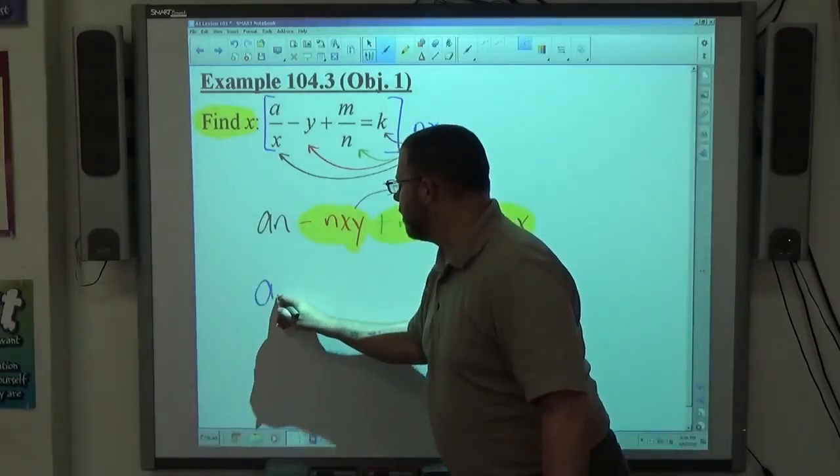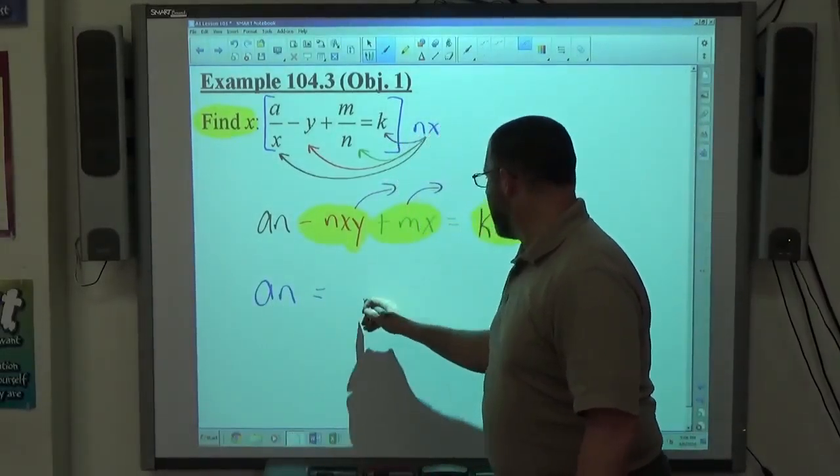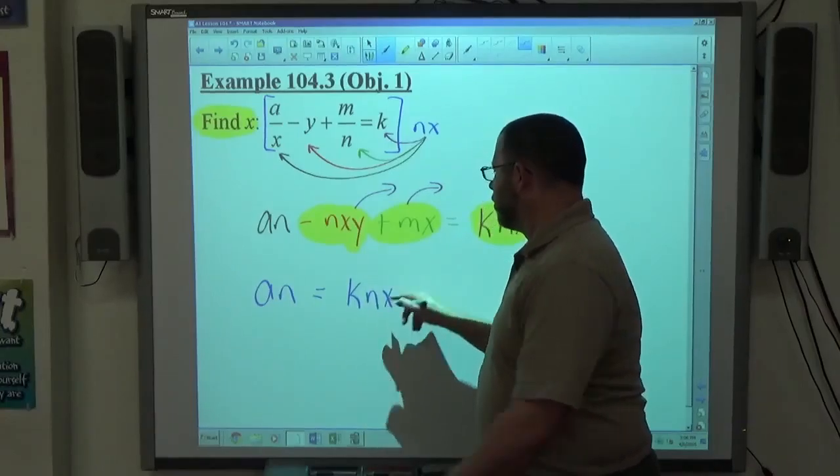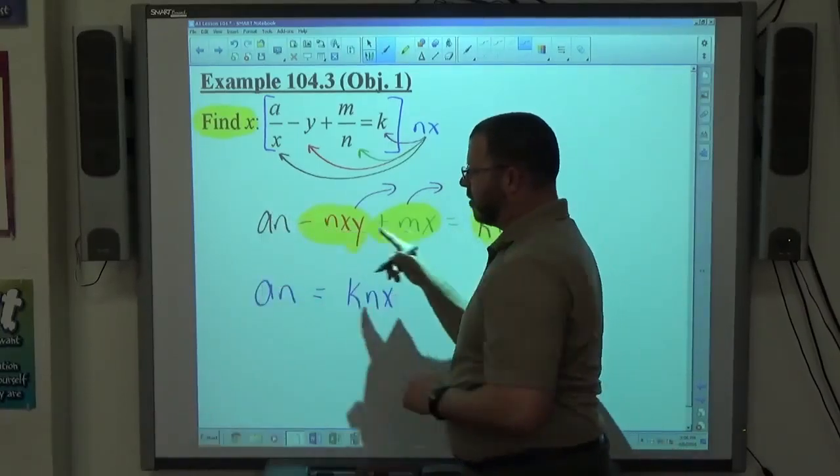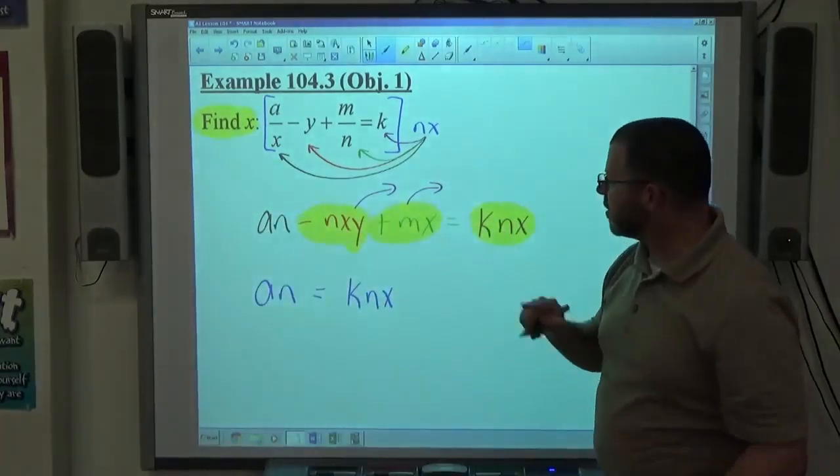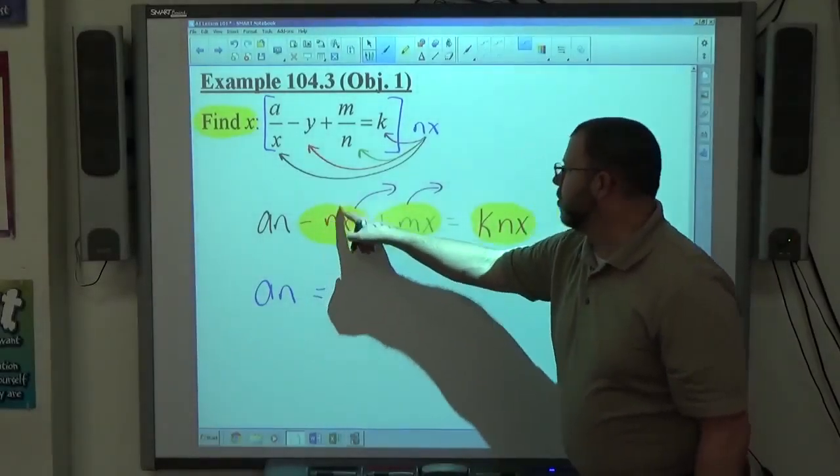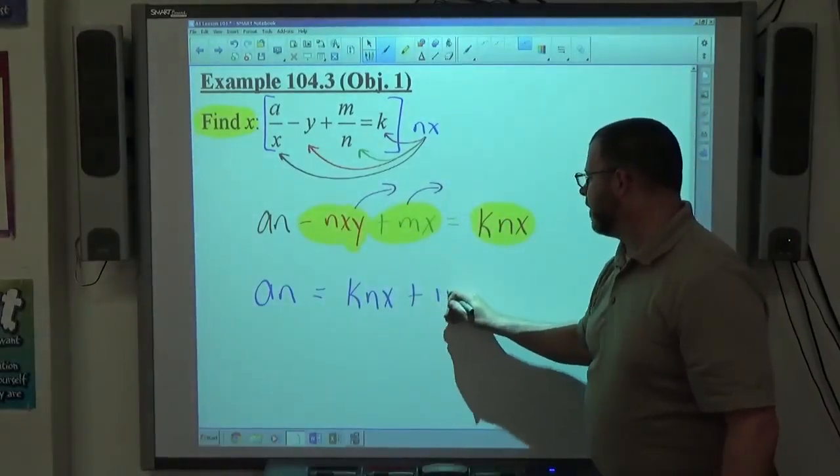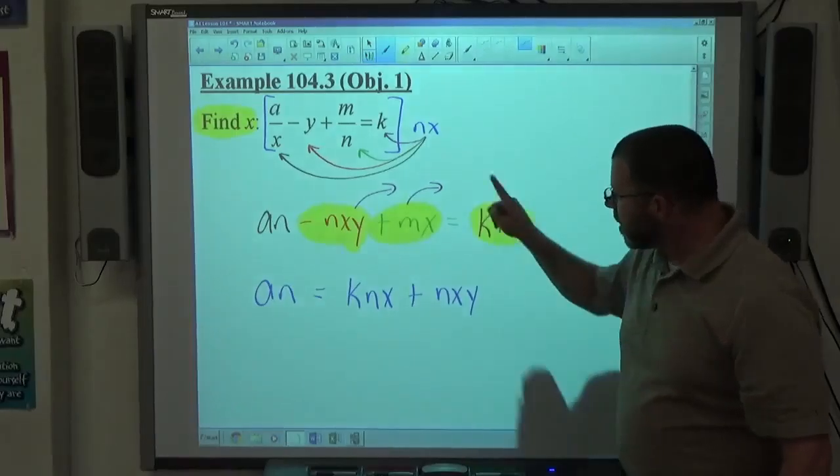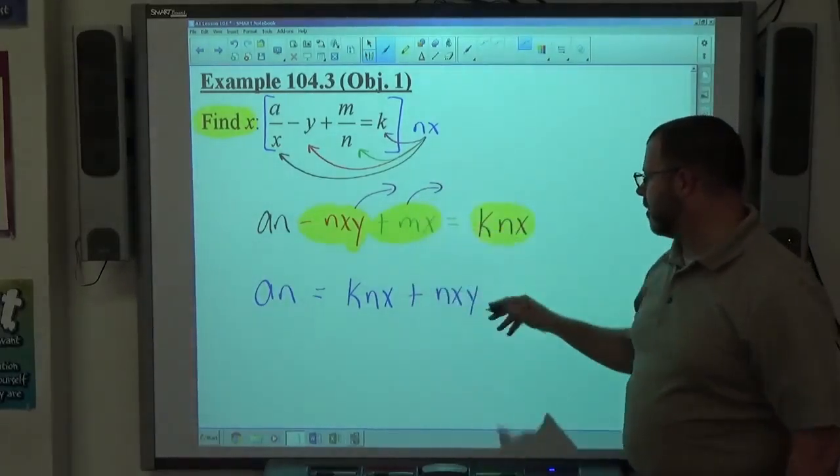Alright, so I end up with AN all by itself on the left-hand side equals KNX on the right-hand side. Those two objects stayed where they were, so they stayed positive, positive AN, positive KNX. NXY is negative, moves across the equal sign, becomes positive NXY. MX moves across the equal sign, becomes negative MX.